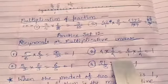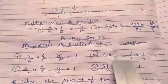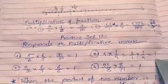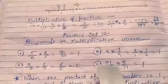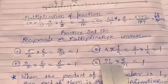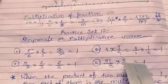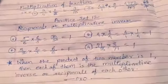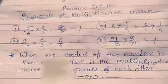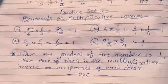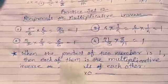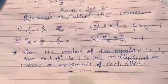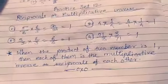Example 3: 4 and 1 upon 4. 4 × 1 = 4 and 4, so 4 upon 4 equals 1. Example 4: 71 upon 3 and 3 upon 71 — the product is also 1. Note: When the product of two numbers is 1, each is the multiplicative inverse or reciprocal of the other. Thank you.